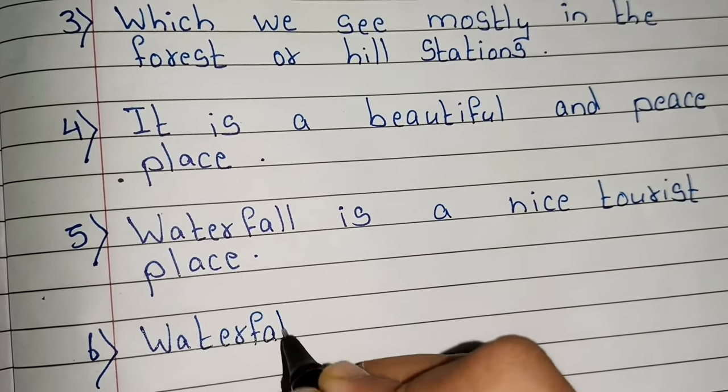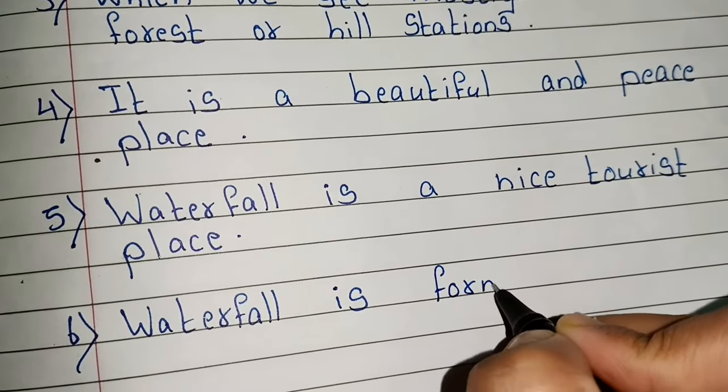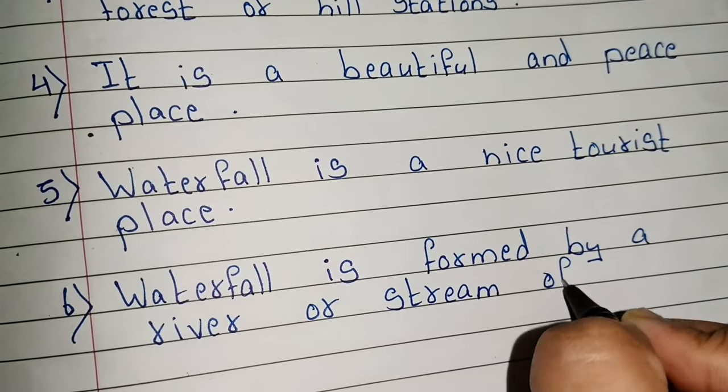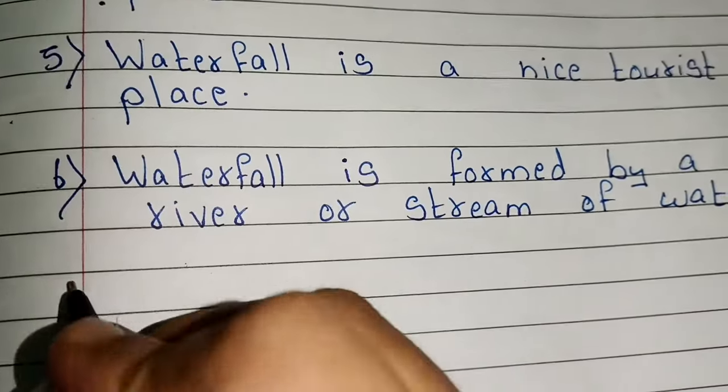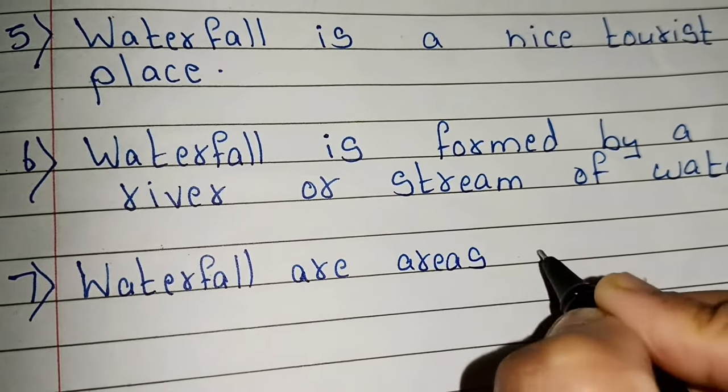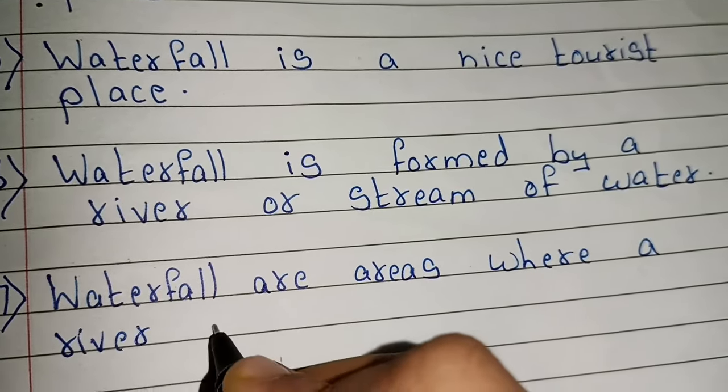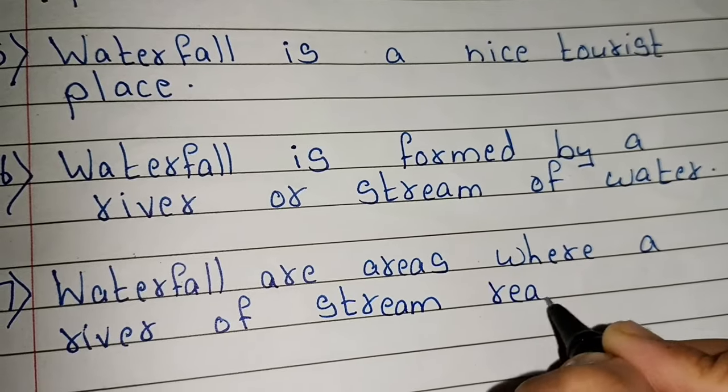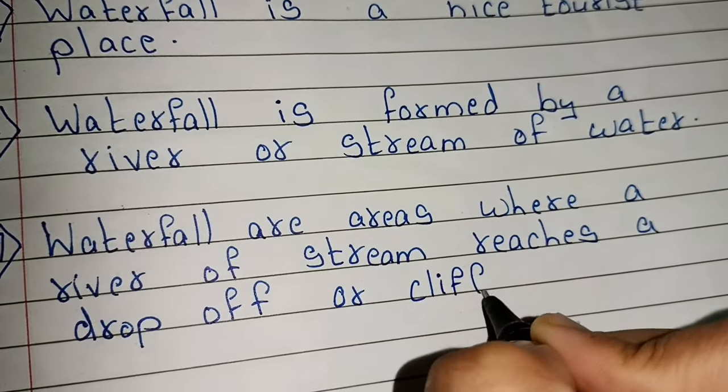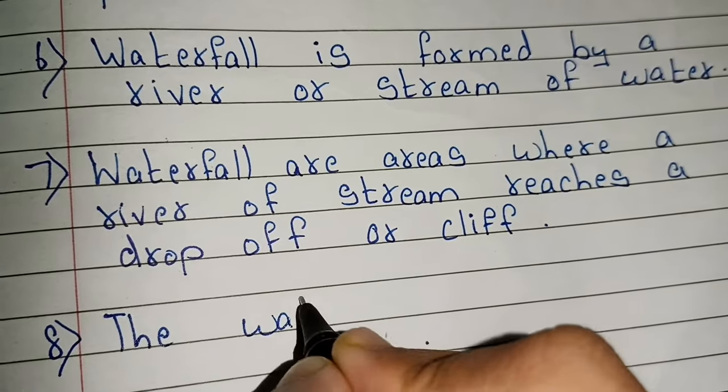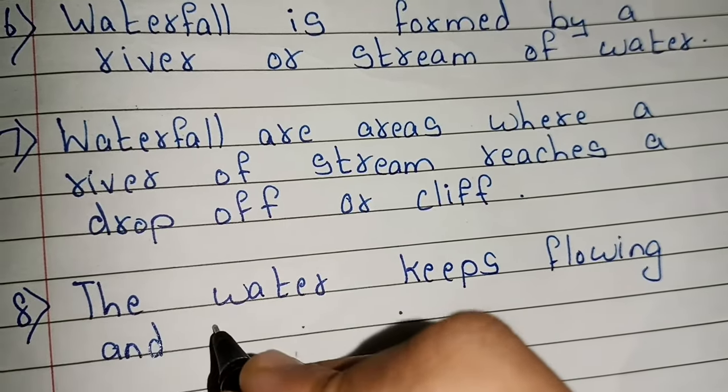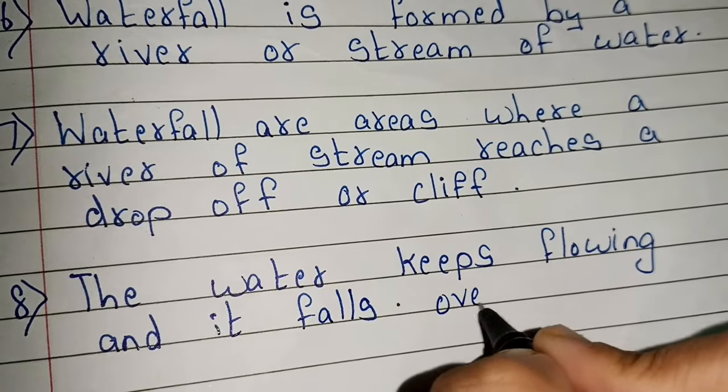Waterfall is formed by a river or stream of water. Waterfalls are areas where a river or stream reaches a drop or cliff. If the water keeps flowing, it falls over the edge.